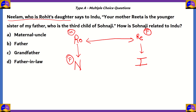Neelam's father (Rohit) is the third child of Sonaji, which means Sonaji is the father of both Rohit and Rita. Since Sonaji is the father of Rita, and Rita is the mother of Indu, Sonaji is the grandfather of Indu. The correct answer is option C, grandfather.